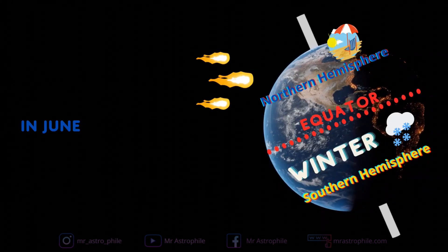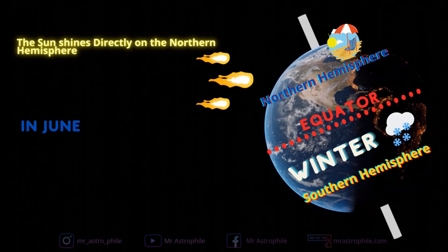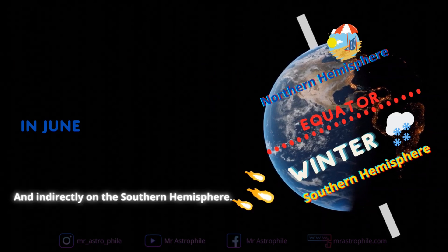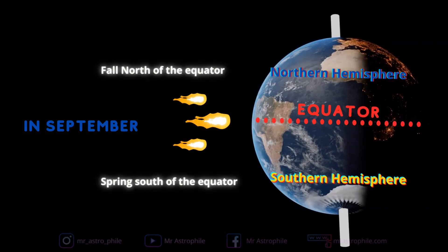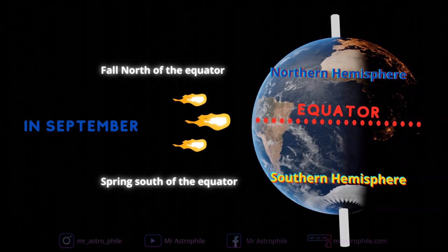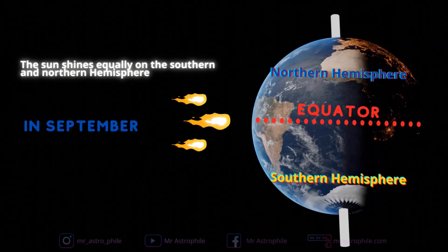In June, it is winter south of the equator and summer north of the equator. The Sun shines directly on the northern hemisphere and indirectly on the southern hemisphere. In September, it is spring south of the equator and fall north of the equator, and the Sun shines equally on both hemispheres.